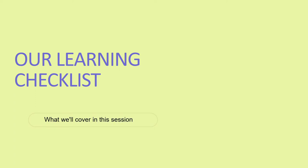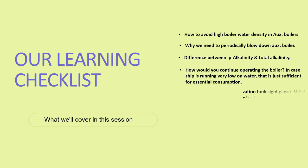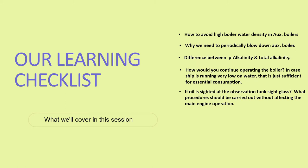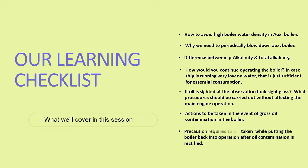Our learning checklist — what we will cover in this session: if oil is sighted at the observation tank side glass, what procedure should be carried out without affecting main engine operation; action to be taken in the event of gross oil contamination in the boiler; and precautions required while putting the boiler back into operation after oil contamination is rectified.